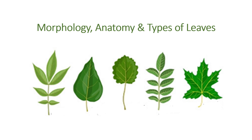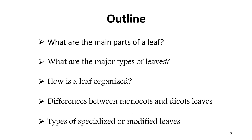In this lecture we will learn about leaf morphology, its anatomy, and different types of leaf and its modified form. Contents to be covered are: what are the main parts of a leaf, what are the major types of leaf, how is a leaf organized, differences between monocot and dicot leaves, and different types of specialized or modified leaf.